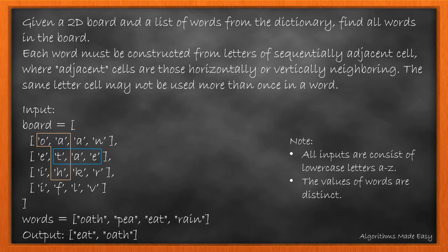For the example given, we could find OATH and EAT in the board. So the program returns these two words. We must note that the input consists of lowercase letters A to Z and the values of words will be distinct.